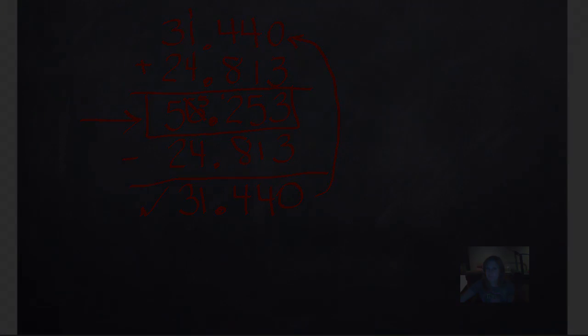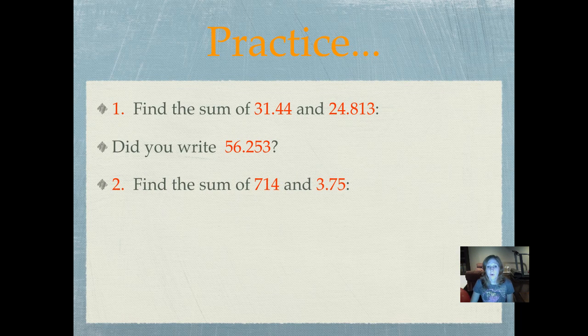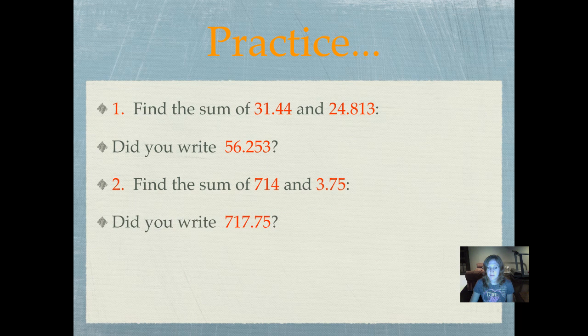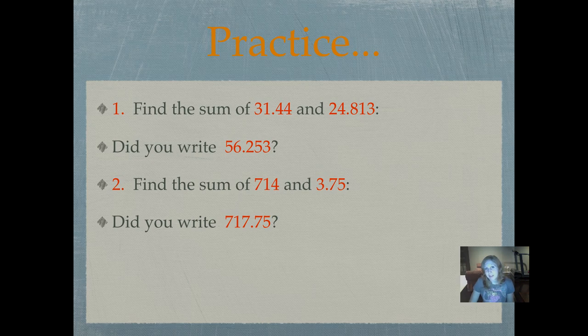Now we'll try some more. Number two. We're going to find the sum of seven hundred fourteen and three and seventy-five hundredths. Go ahead and work it in your journal. If you need a little hint, remember that every whole number has an invisible decimal at the end of the number. Did you write seven hundred seventeen and seventy-five hundredths?